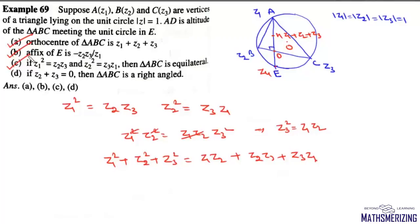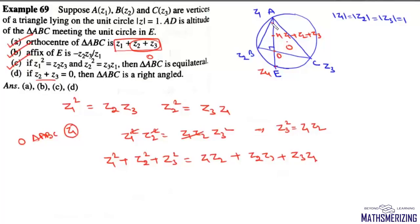For option D: if Z1 + Z2 + Z3 = 0, then ABC is a right-angled triangle. From option A, the orthocentre H = Z1 + Z2 + Z3. If Z1 + Z2 + Z3 = 0, then H = 0, which means the orthocentre coincides with the circumcenter — wait, actually if Z1 + Z2 = 0 is implied then H = Z1, so the orthocentre is at vertex A, meaning triangle ABC is right-angled at A. So option D is also correct.